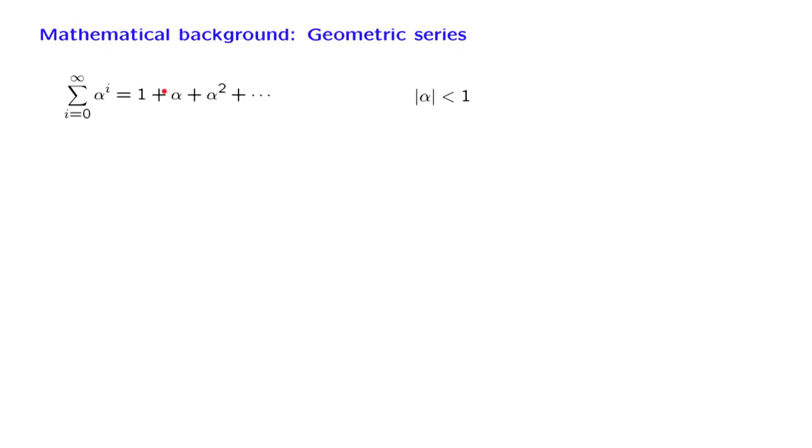In the geometric series, we're given a certain number alpha. And we want to sum all the powers of alpha, starting from the 0th power, which is equal to 1, the first power, and so on. And this gives us an infinite series. It's the sum of alpha to the i, where i ranges from 0 to infinity.